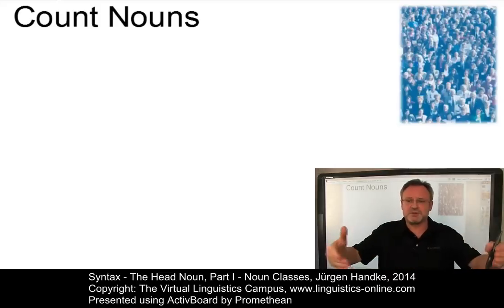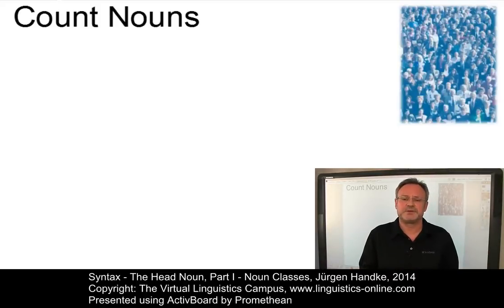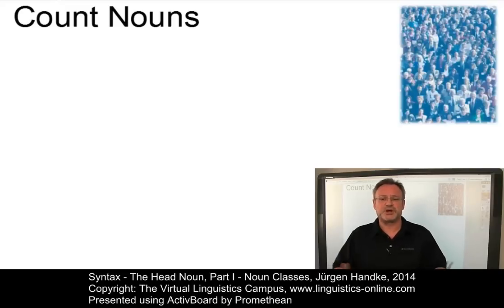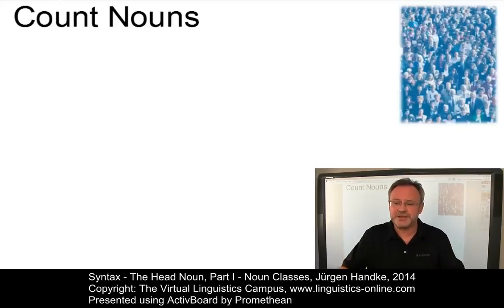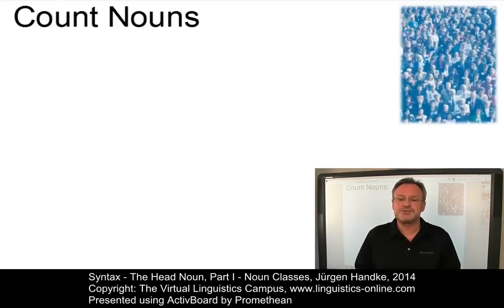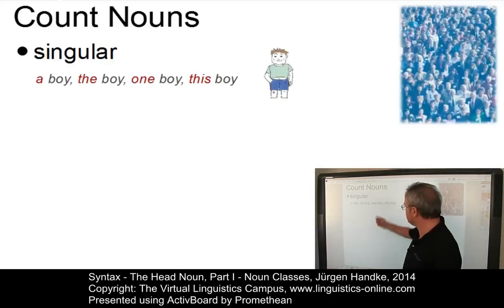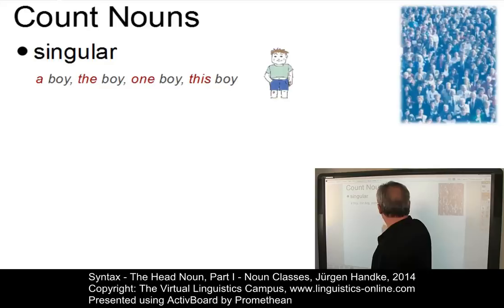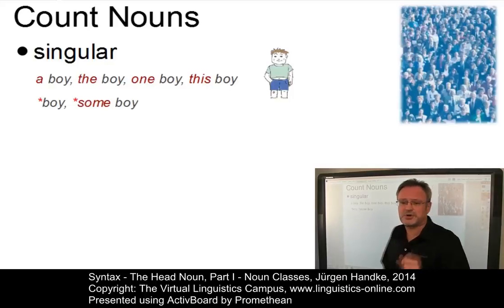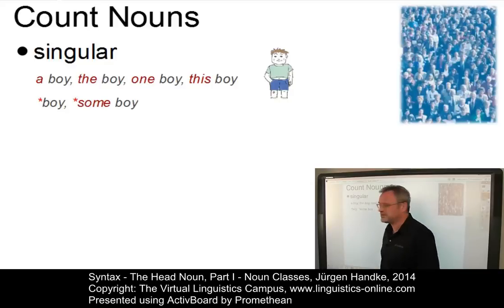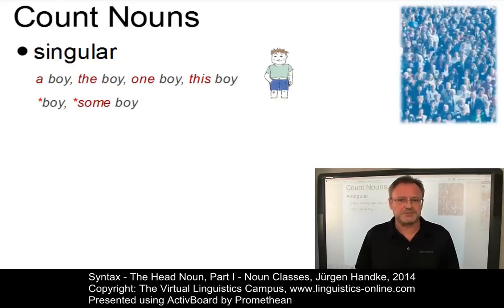Count nouns — in some grammar books they're also termed countable — refer to entities that are viewed as countable. For example, 'boy.' Thus, they can be inflected for both singular and plural and can be accompanied by determiners that refer to distinctions in number. In the singular, count nouns must have a determiner: 'a boy,' 'the boy,' 'one boy,' 'this boy,' and so on. Furthermore, count nouns cannot occur without an article — 'boy' alone is impossible — or in so-called partitive constructions, so 'some boy' is also ungrammatical.